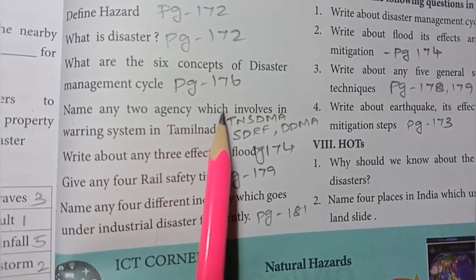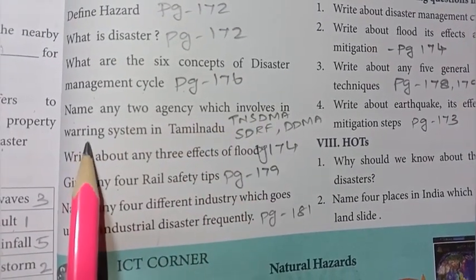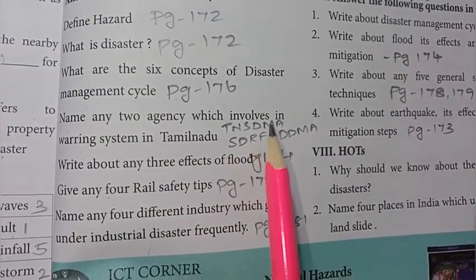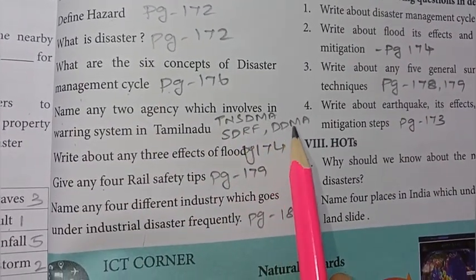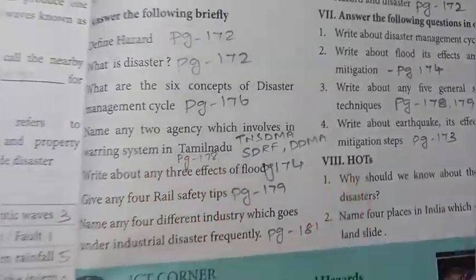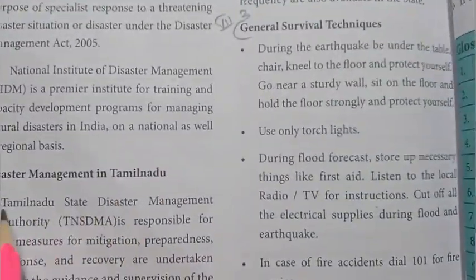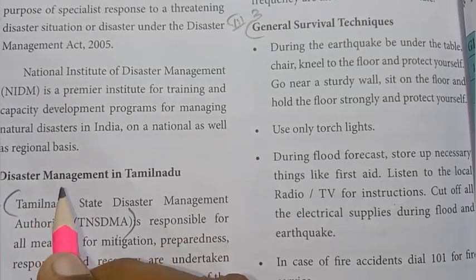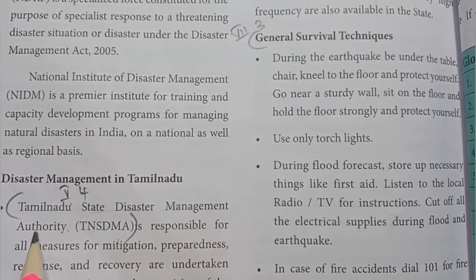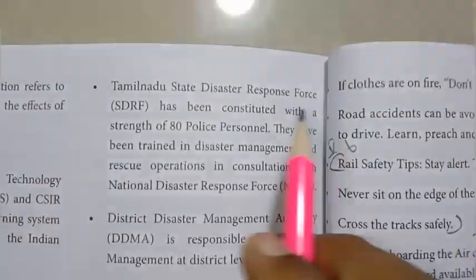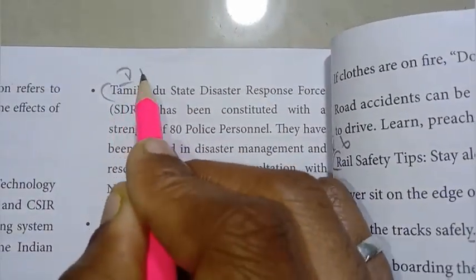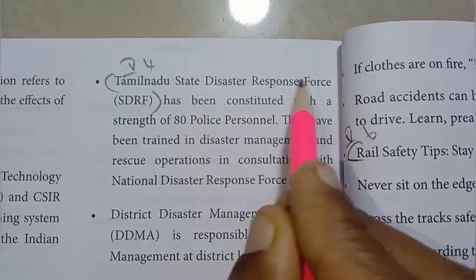Fourth question: name any two agencies which are involved in the warning system in Tamil Nadu. Refer to page number 178. The agencies are: TNSDMA — Tamil Nadu State Disaster Management Authority; SDRF — Tamil Nadu State Disaster Response Force; and DDMA — District Disaster Management Authority. Any two of these are acceptable.